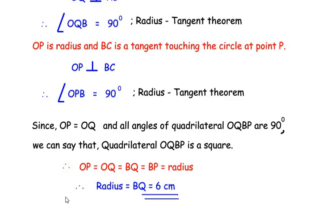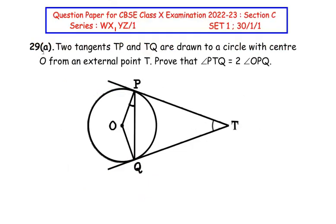Now let us move on to question 29A, also from the circles chapter. Two tangents TP and TQ are drawn to a circle with center O from an external point T. We have to prove that angle PTQ = 2 × angle OPQ. The solution for this question is available via the link shown. You can also watch the playlist on CBSE additional practice questions. If you are enjoying the videos, please like, share, and subscribe to the channel. Thank you for watching.